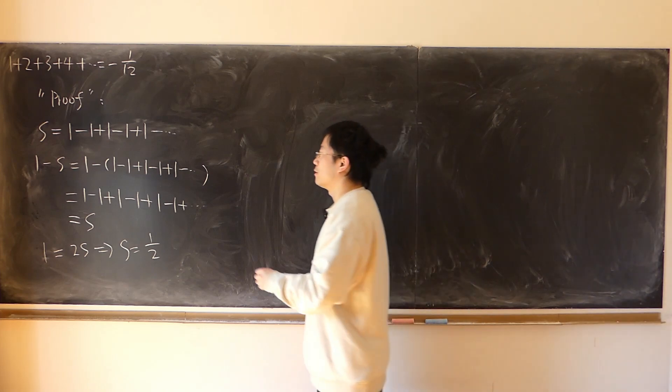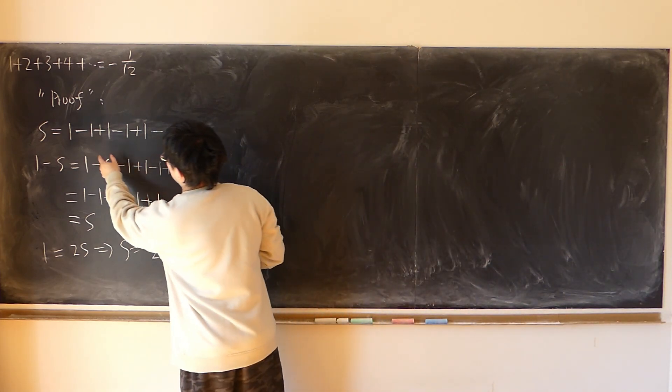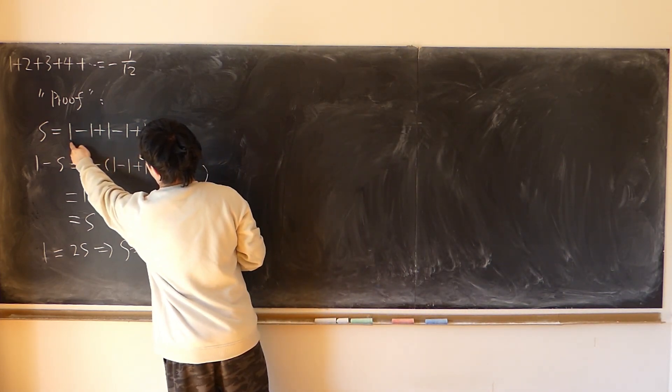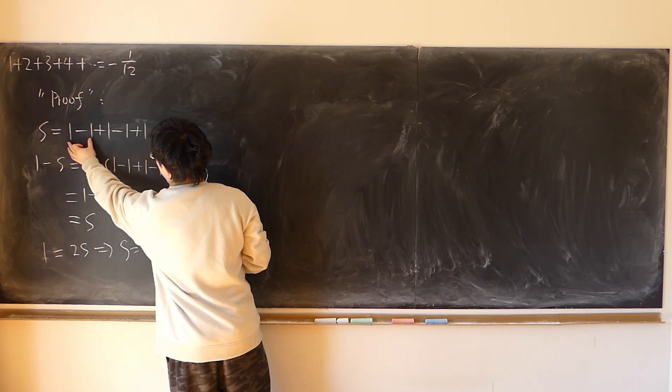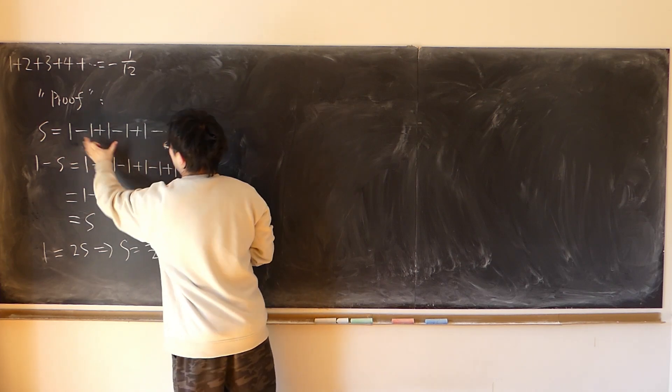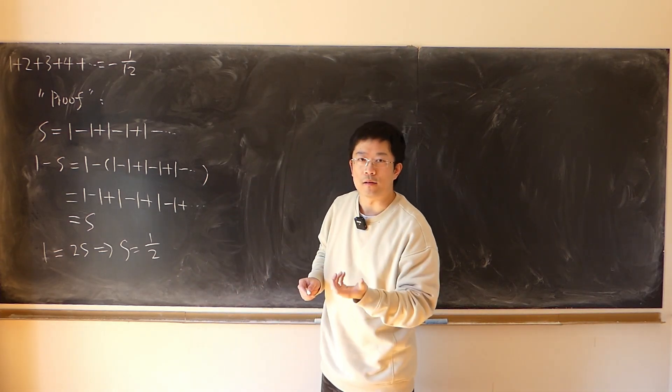Even though s is oscillating in between. So here, first term 1. Sum of the first two terms, 0. Sum of first three terms, 1. So it's oscillating between 1 and 0.